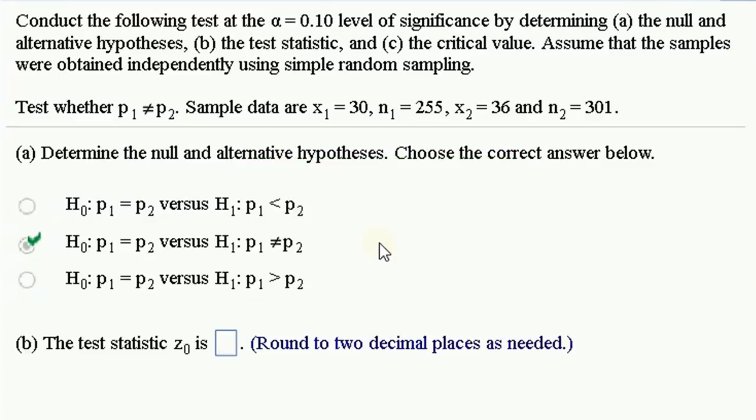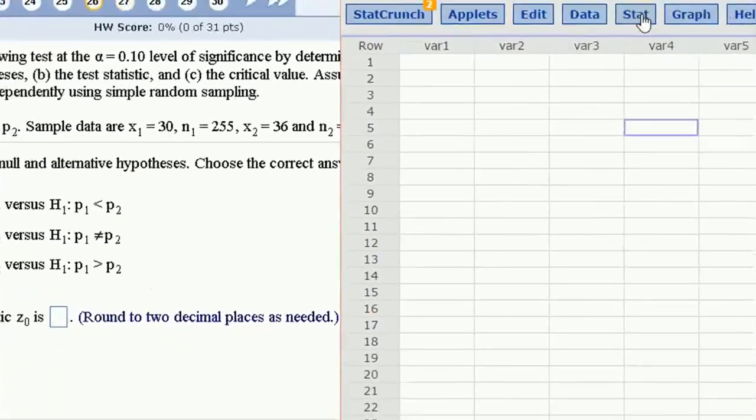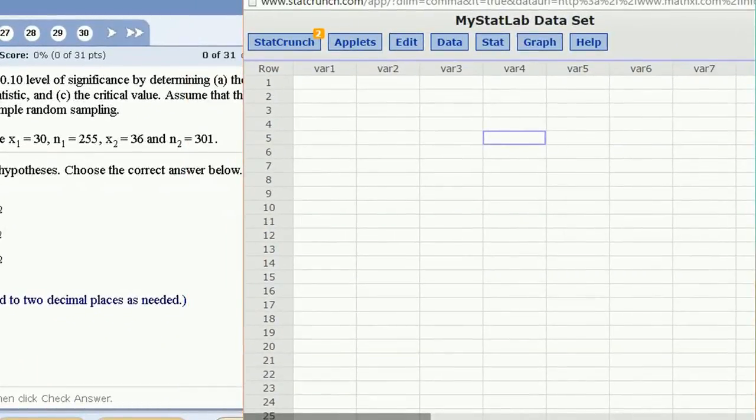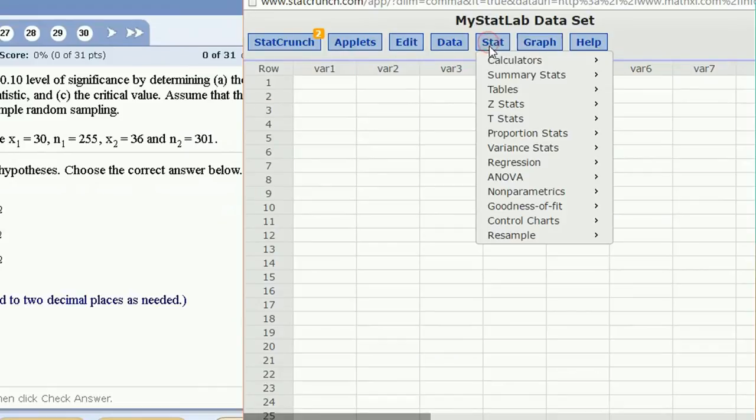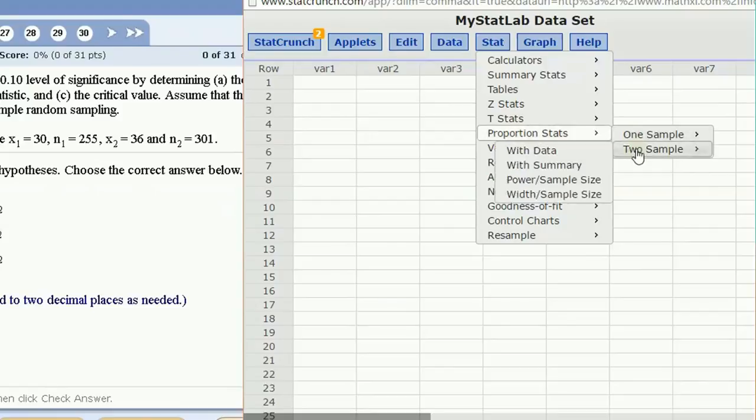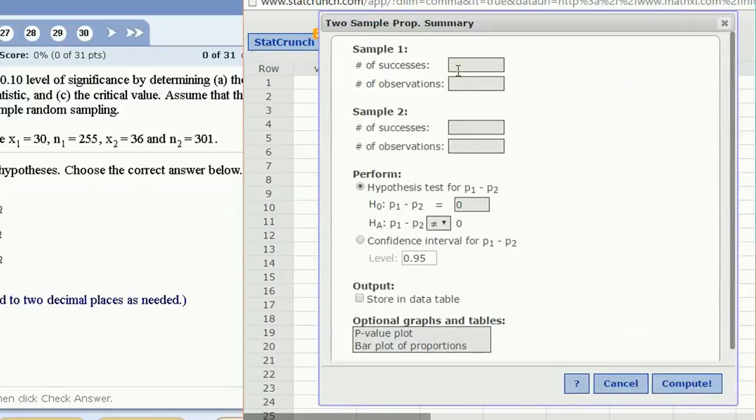Now I want to show you how in StatCrunch we can run the hypothesis test. So under stat, under the proportion stats, two sample with summary, we just enter from the first sample we have 30 out of 255, and from the second sample we have 36 out of 301. And now the hypothesis test, notice P1 minus P2 equals zero is the same as P1 equals P2. So that's what we should pick. And the alternative we pick not equal to. Just click compute and that'll do the hypothesis test.